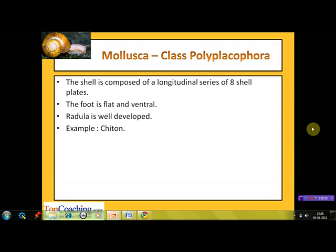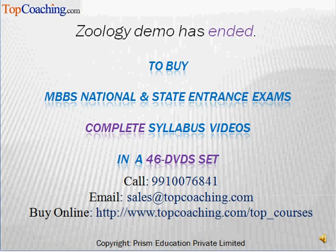The next class is Polyplacophora, meaning many-plates-bearing. The shell, as the name indicates, is composed of a longitudinal series of eight shell plates. The foot is flat and ventral in position. The radula is well developed. The example of this class is Chiton.